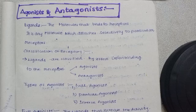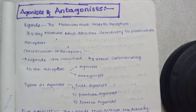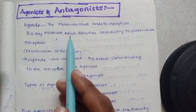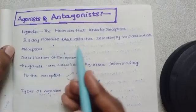Agonist is to support you. Antagonist is to oppose you. Agonist does the same action, and that is the action of your body. Those are the antagonists. This is the first concept of agonist.